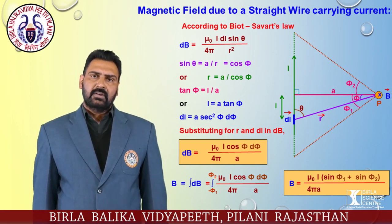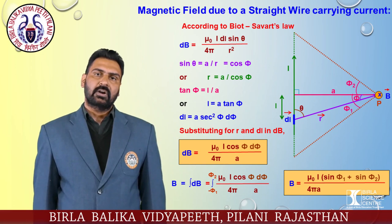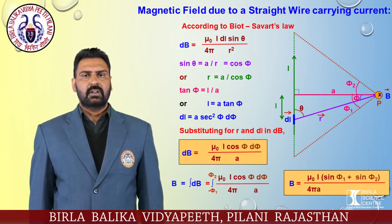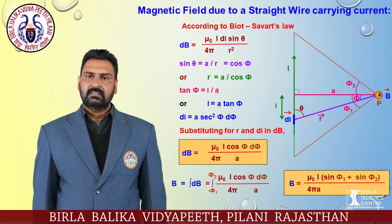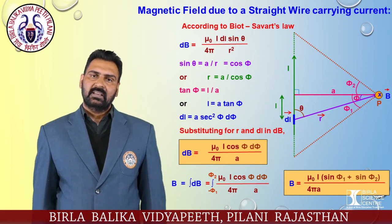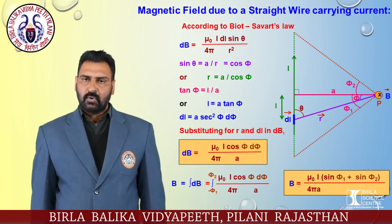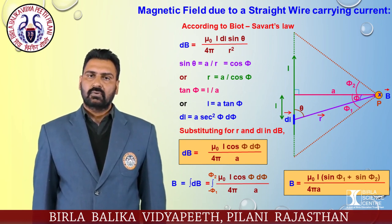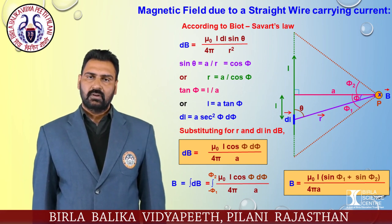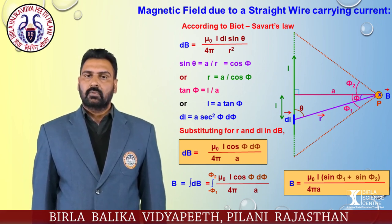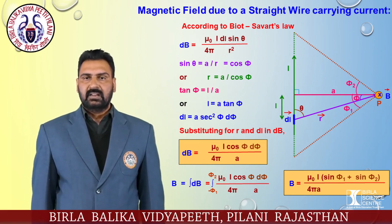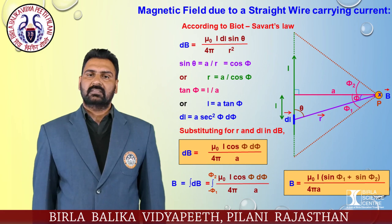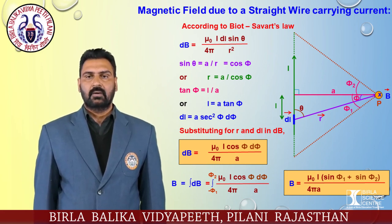For the magnetic field due to a straight wire carrying current, using Biot-Savart's law: dB = (μ₀/4π) · (i dl sin θ / r²). From the geometry, sin θ = a/r = cos φ, so r = a/cos φ. Also, tan φ = l/a, giving l = a tan φ, and therefore dl = a sec²φ dφ. Substituting for r and dl into the expression for dB, we get dB = (μ₀ i cos φ dφ) / (4π a).